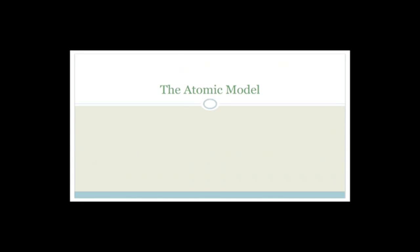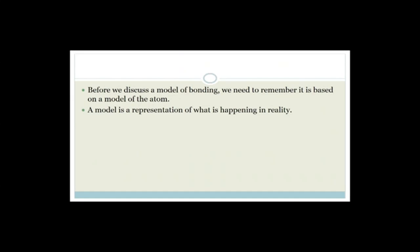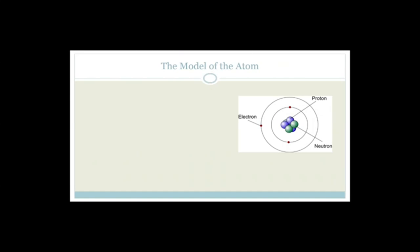Okay, let's move to the atomic model — let's do some chemistry. Before we discuss the model of bonding, we need to remember it is based on the model of the atom. You must remember that the definition of a model in science is that it is a representation of what is happening in reality — it's how we are trying to describe and explain what's actually really happening. So let's talk about today's understanding of the model of the atom, and admittedly, this is a simplistic version of our model.